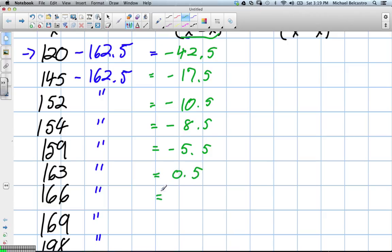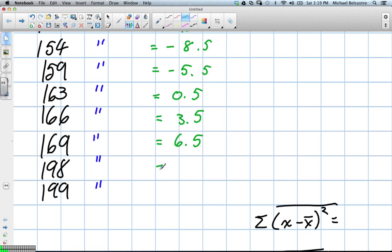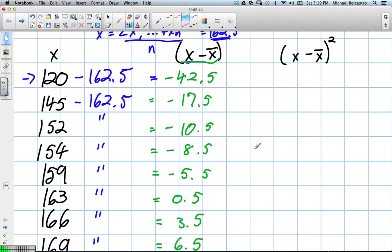This one will be 3.5. This one will be 6.5. This one will be 35.5? And this one should be 36.5. Great. So we're taking all of those values.